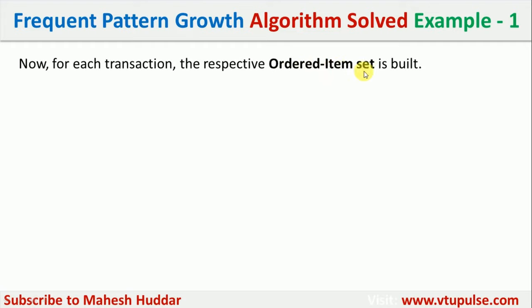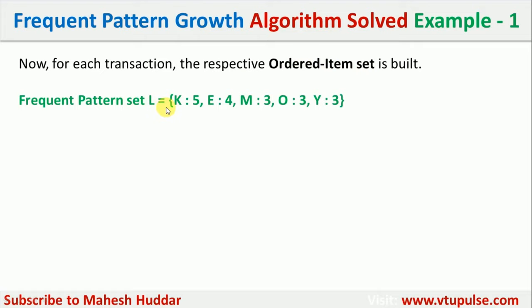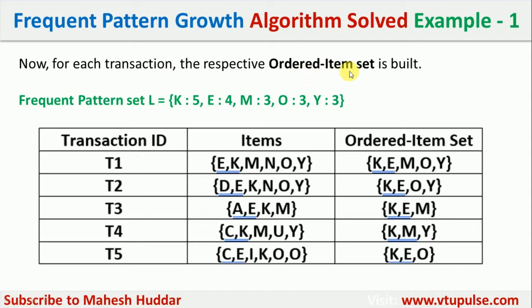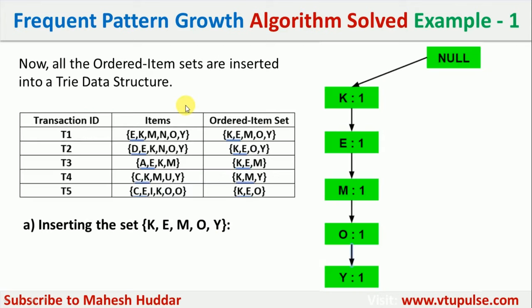Using the frequent pattern set L, we find the ordered item sets for each transaction. We check which items are present in L and arrange them in decreasing order of frequency. For example, in transaction 1: E, K, M, O, Y are all present (N is not), so the ordered item set is K, E, M, O, Y. In transaction 4: C and U are not in L, but K, M, Y are, giving the ordered item set K, M, Y. Once all ordered item sets are identified, the next step is to build the trie data structure.